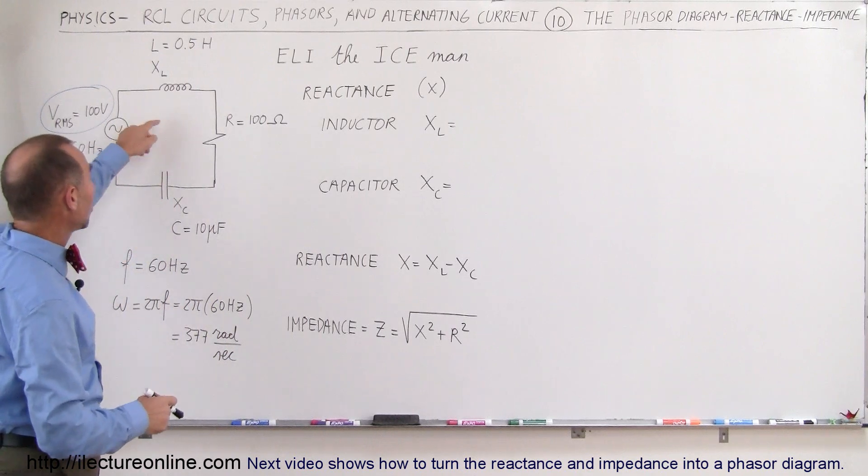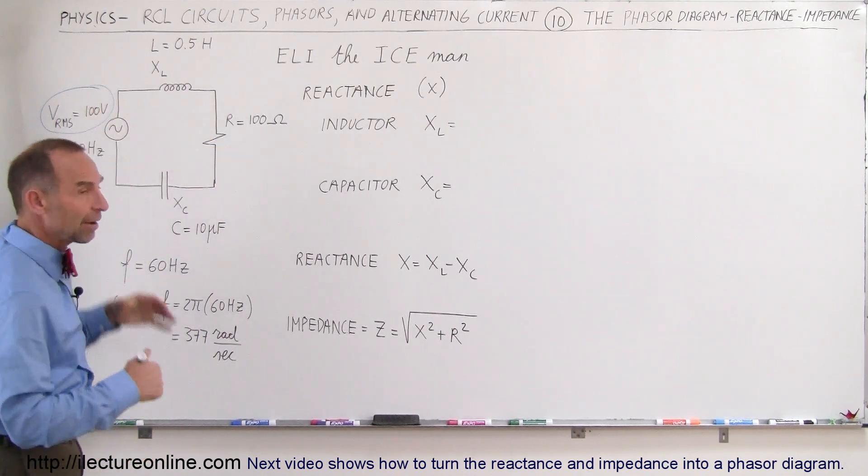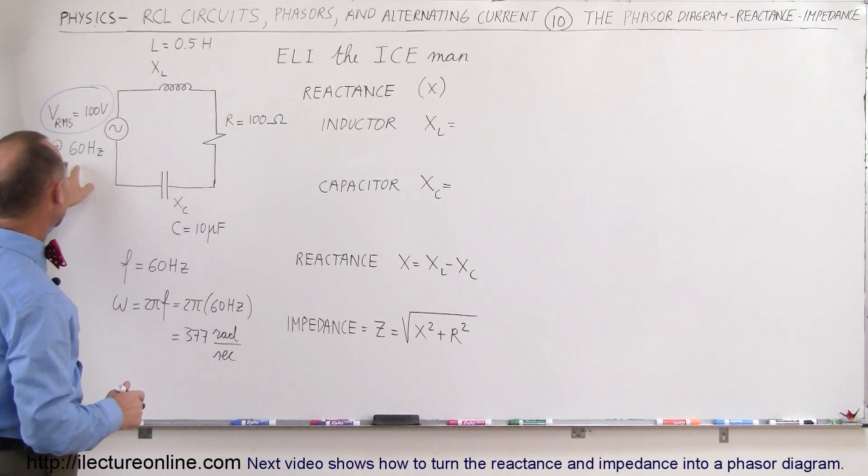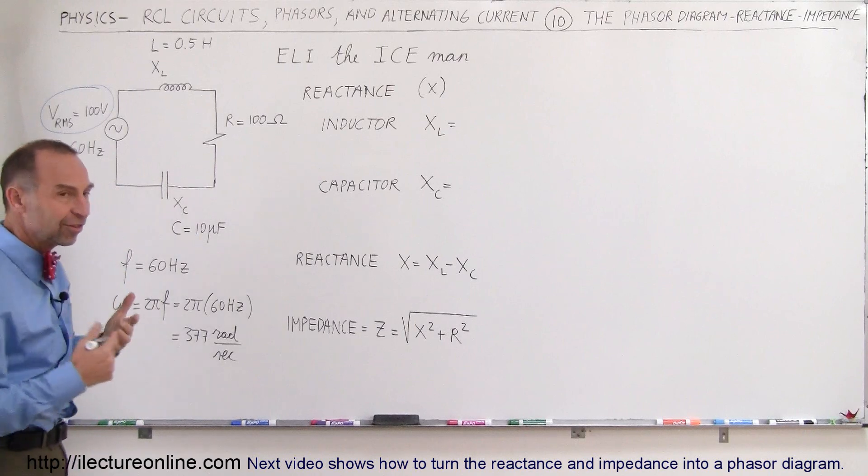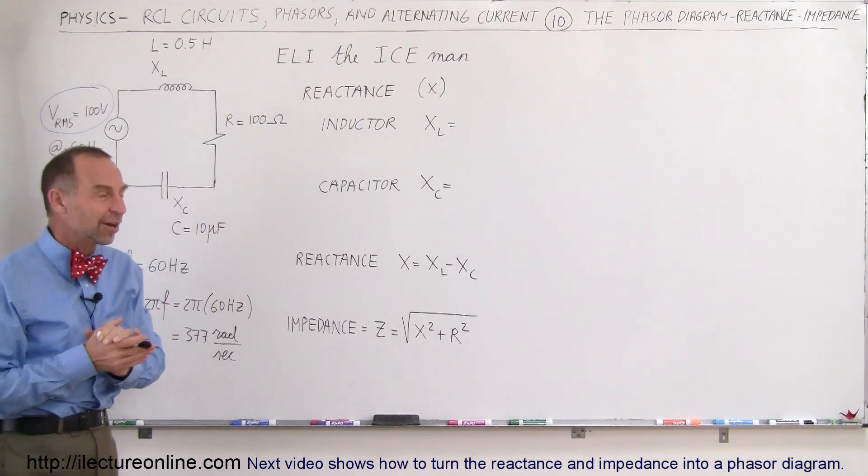So here again we have what we call an RCL circuit. We have an inductor, we have a resistor, we have a capacitor, and we have an oscillating voltage supply. Let's say we have 100 volts RMS and the frequency of oscillation is 60 hertz, 60 cycles per second, which is what we get out of our wall sockets here.